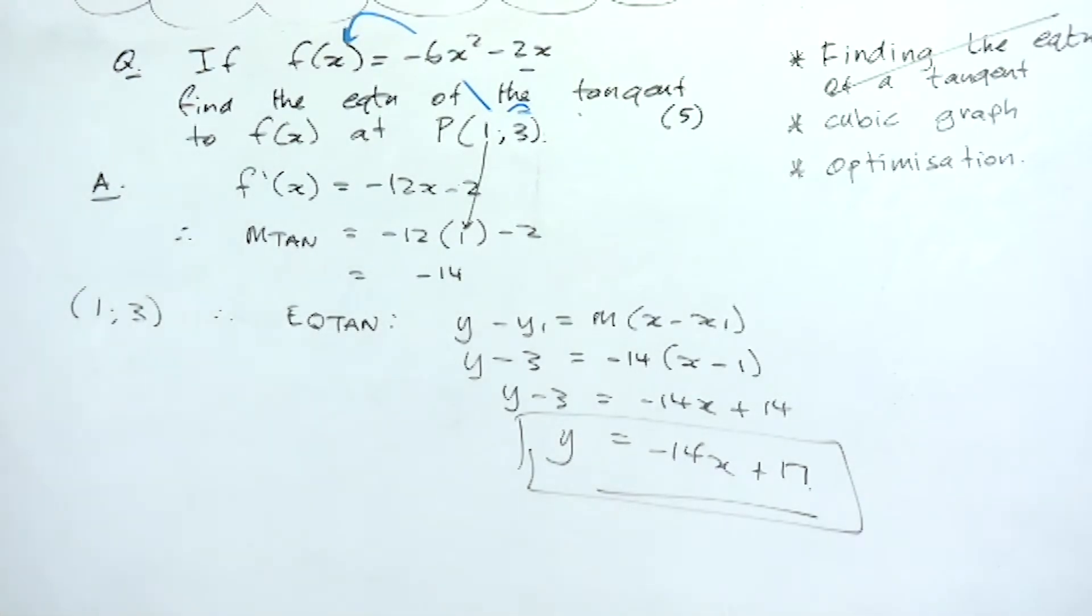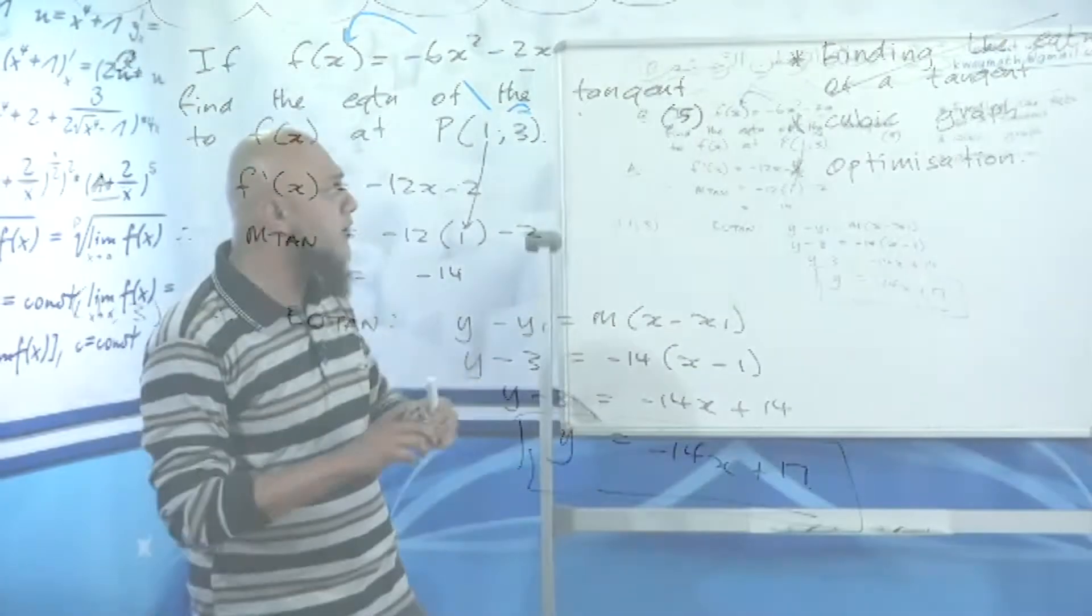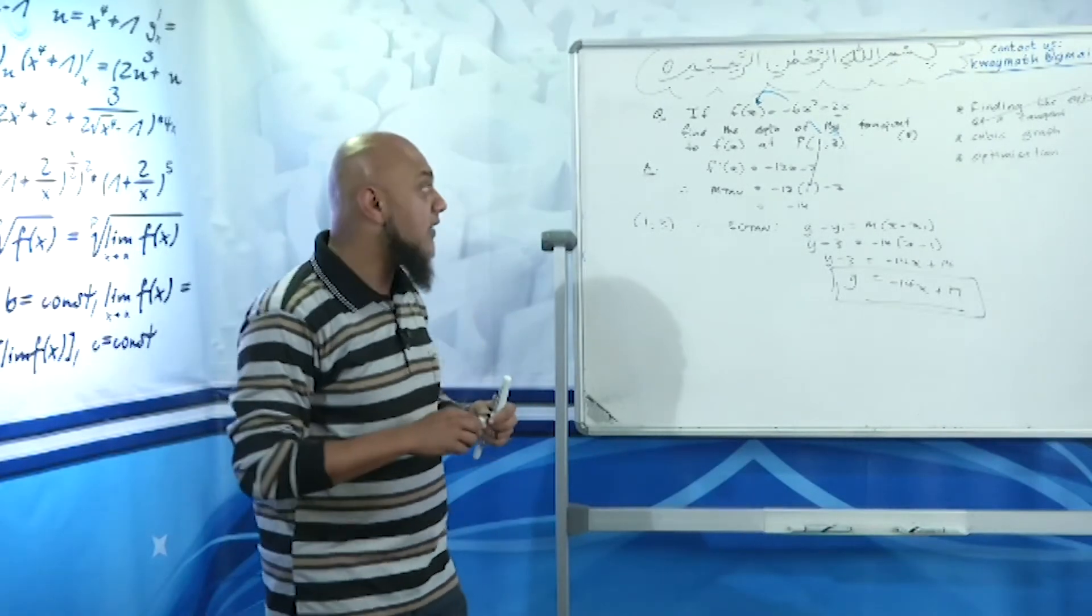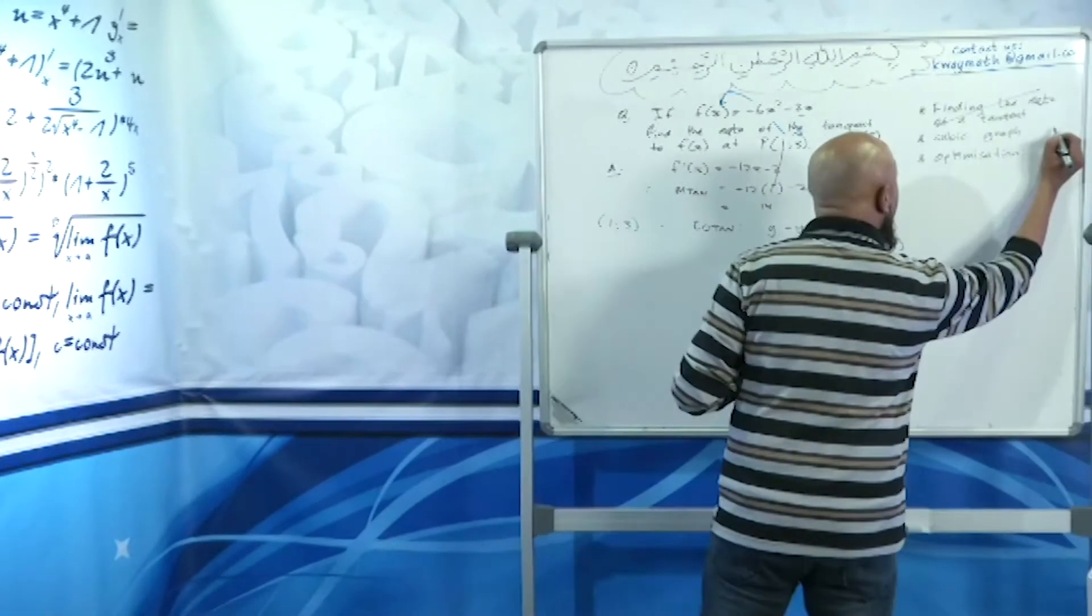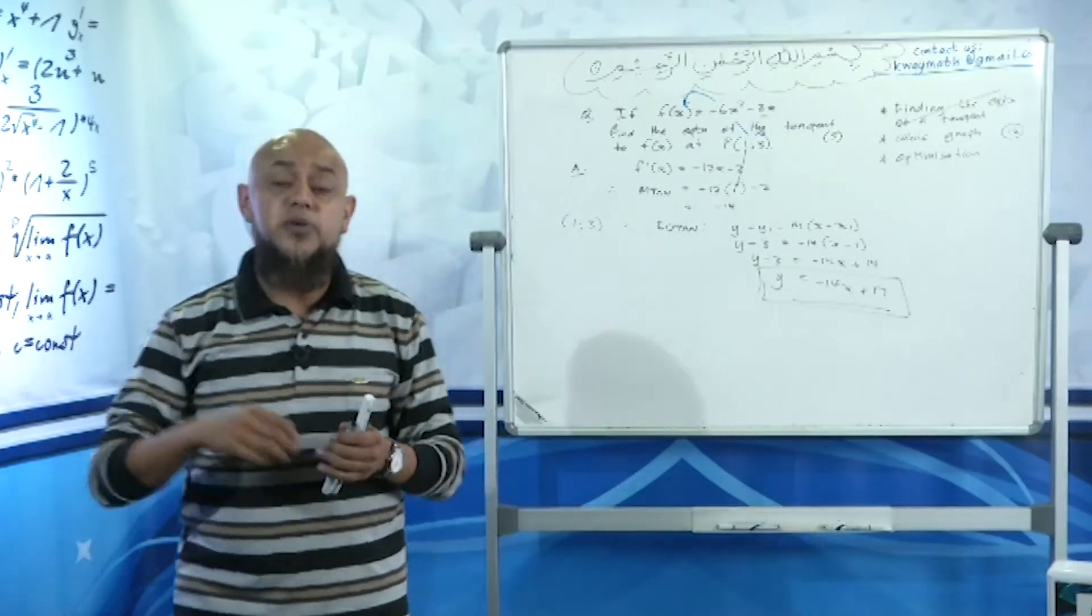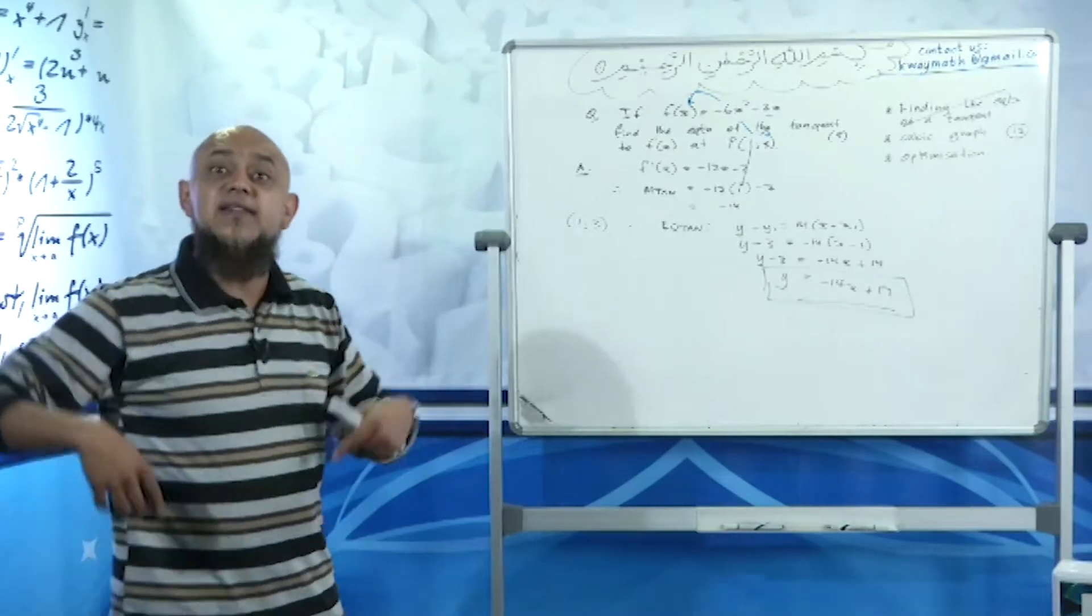And that would be your final answer. We're now done with finding the equation of the tangent. We're now going on to the cubic function. The cubic graph is worth 12 marks.